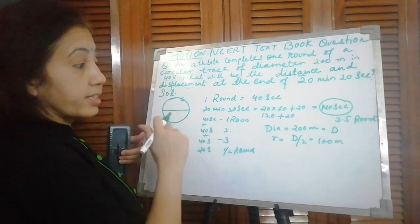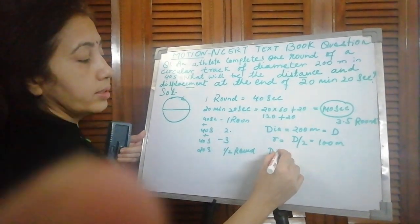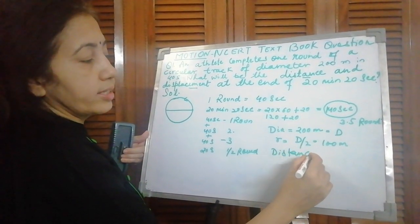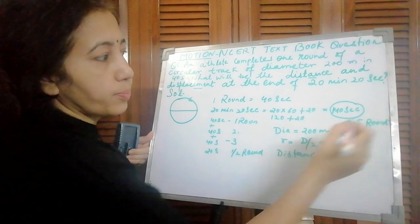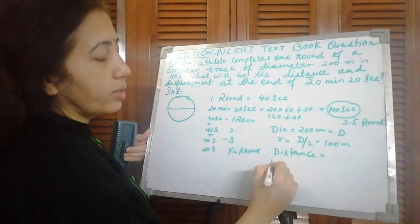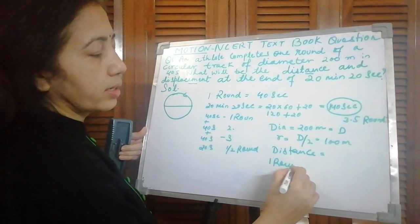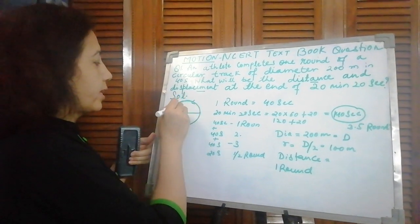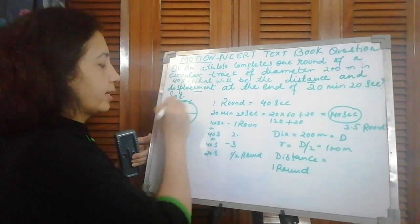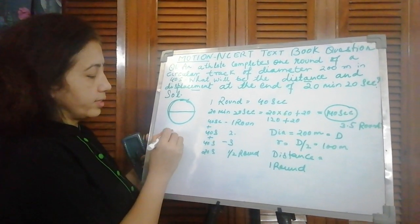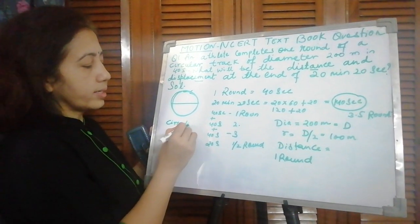Now distance, total distance, how much did he travel? Means 3.5 rounds. One round distance will be the circumference. Circumference formula is 2πr.